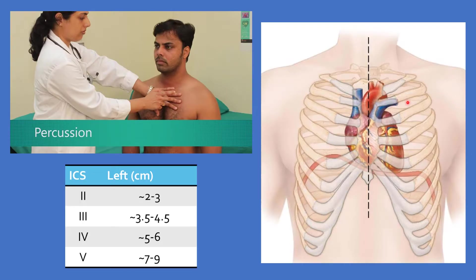In doing cardiac percussion, start with the left side of the chest and percuss from resonance toward cardiac dullness. As soon as you elicit the dull sound, get your tape measure or ruler and measure the distance from the mid-sternal line to the area of cardiac dullness. Normally, it should be approximately 2 to 3 centimeters.